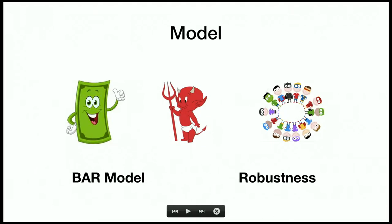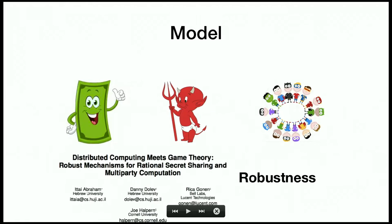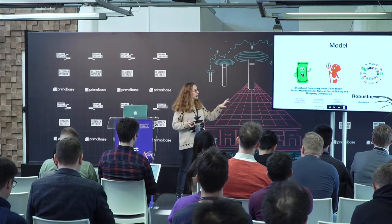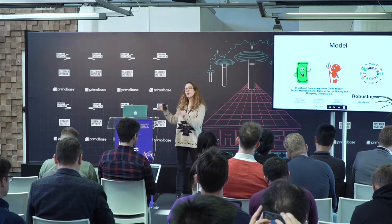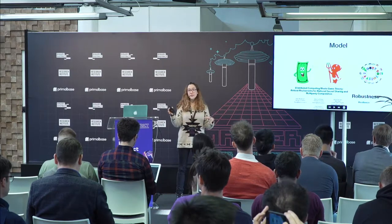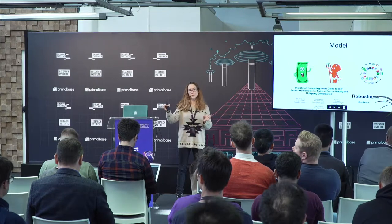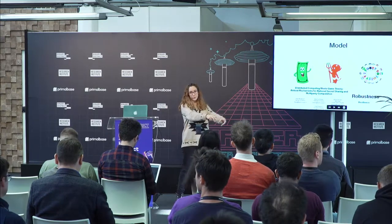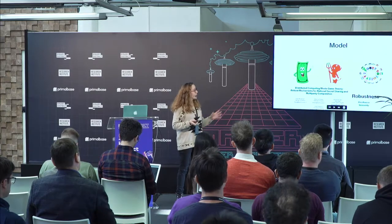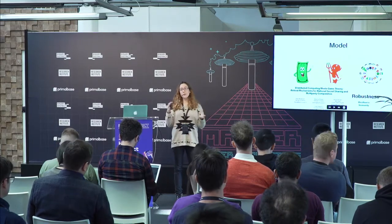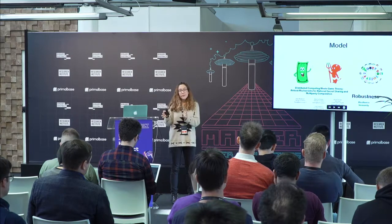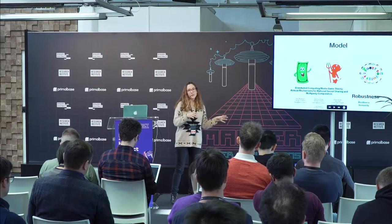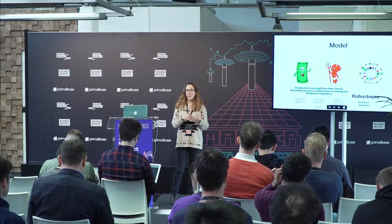In addition to the BAR model, we consider a property called robustness, introduced by Itai Abraham and co-authors. There are two main properties. The first is k-resilience: the idea is to have a Nash equilibrium resistant to coalitions — a coalition of up to k players is not incentivized to deviate from the protocol. The second is immunity: malicious players who don't care about losing money cannot harm honest players — every honest player's utility will not be decreased by malicious players.